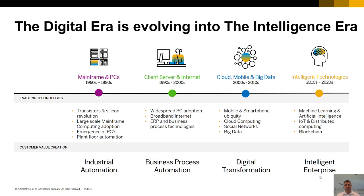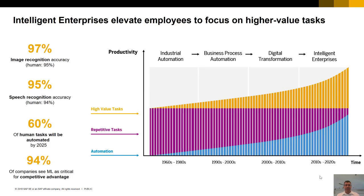In the 60s to 80s we had mainframes, then we went to client-server. In the noughties to 2010, we started talking about the cloud and mobile, big data and all those types of things. Now we're moving into this era of intelligent technologies, where we're building the Internet of Things where all our different devices and systems can all talk to each other, and we're starting to build what we call the intelligent enterprise. A lot of this is driven by our ability to do in-memory computing and take feeds from lots of places, allowing us to do a lot more high-value tasks.